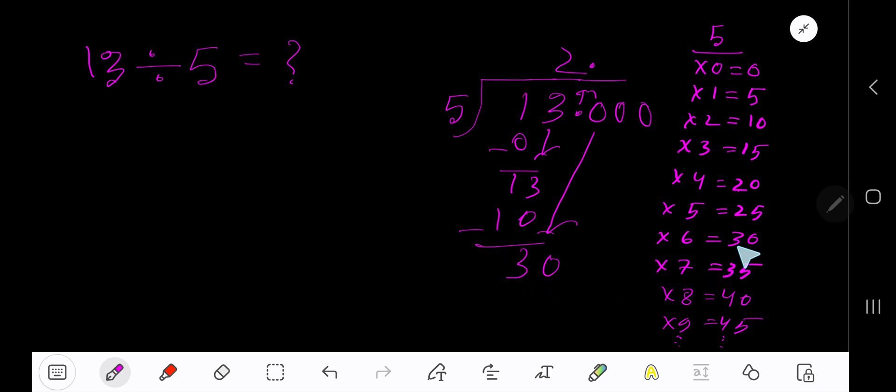So 5 goes into 30 how many times? 5 goes into 30, 6 times. 6 times 5, 30. Subtract. 0. So our answer is 2.6.